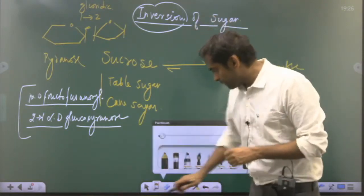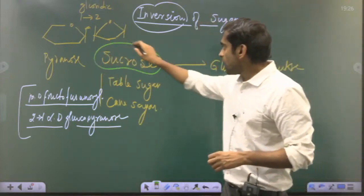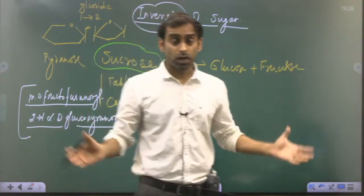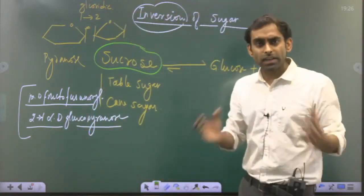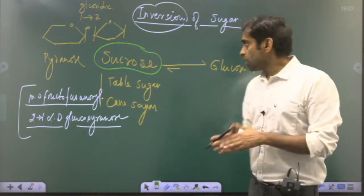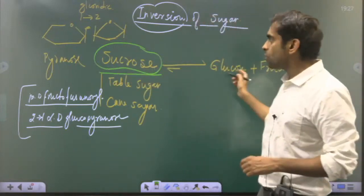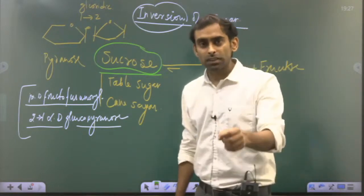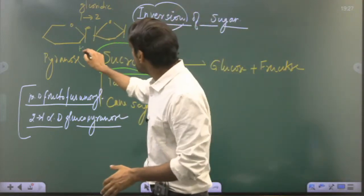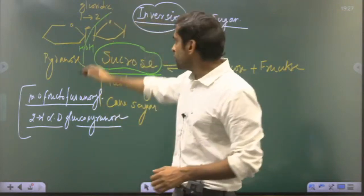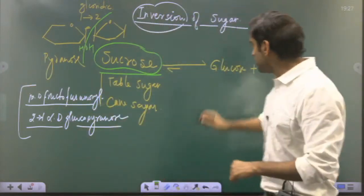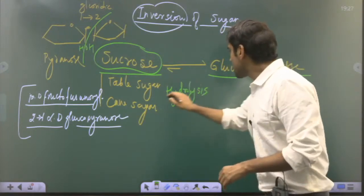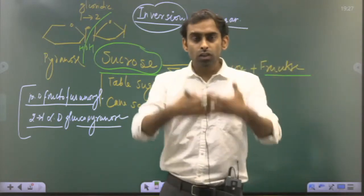When sucrose is used in various products — confectionery, cold drinks, candies — it can undergo a process called hydrolysis. Hydrolysis occurs in many biomolecules when a bond is broken with the help of water (H and OH). When the glycosidic bond in sucrose breaks, it results in the formation of glucose and fructose. That process is known as hydrolysis, which is the opposite of condensation — condensation forms new bonds, hydrolysis breaks them.